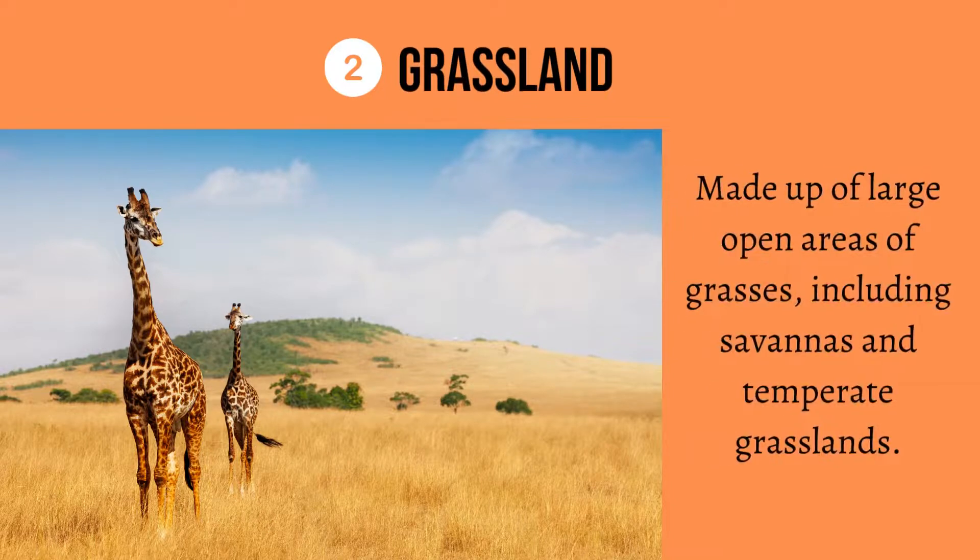2. Grassland — made up of large open areas of grasses, including savannas and temperate grasslands.